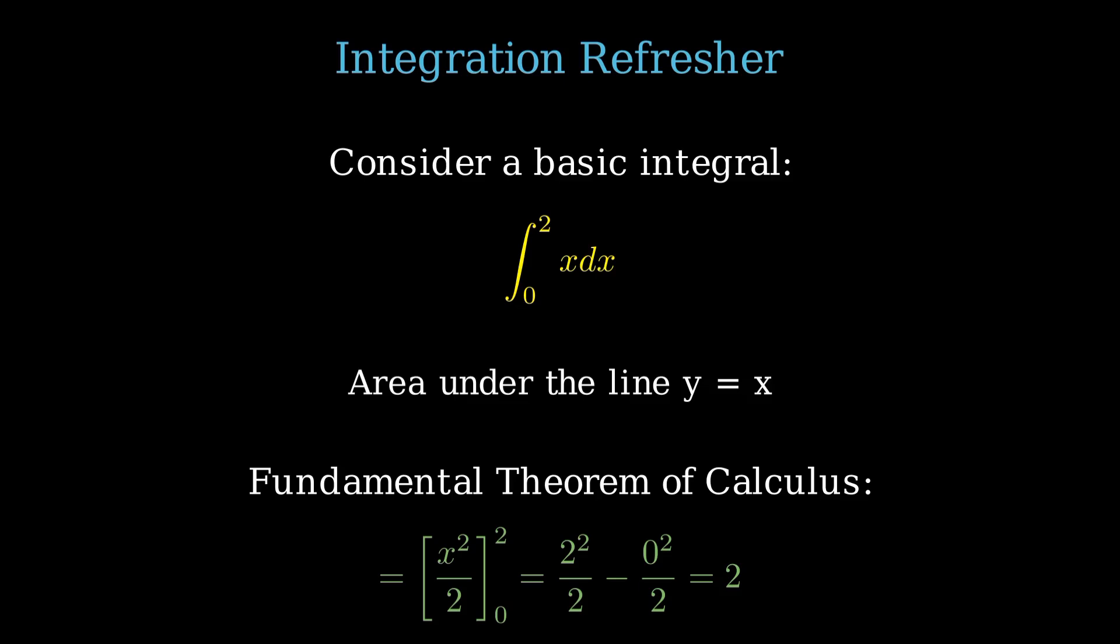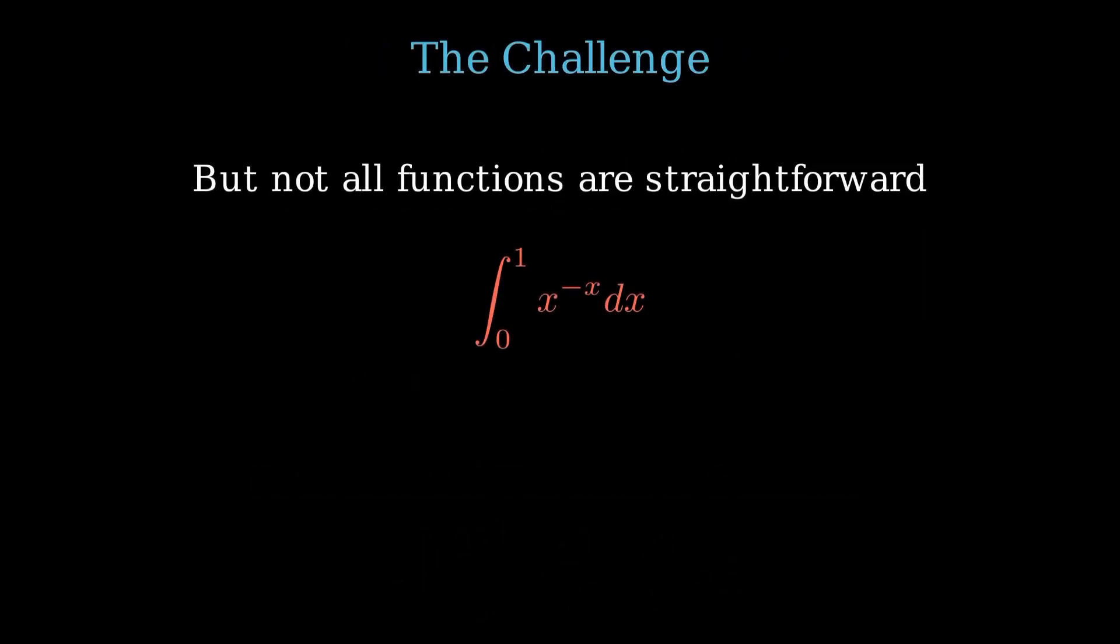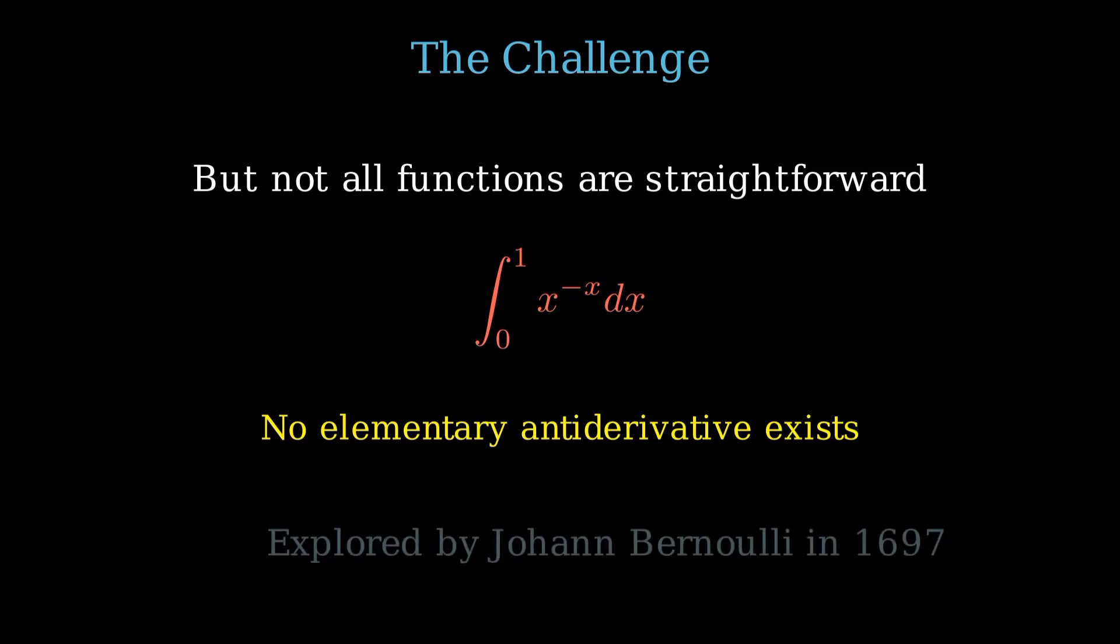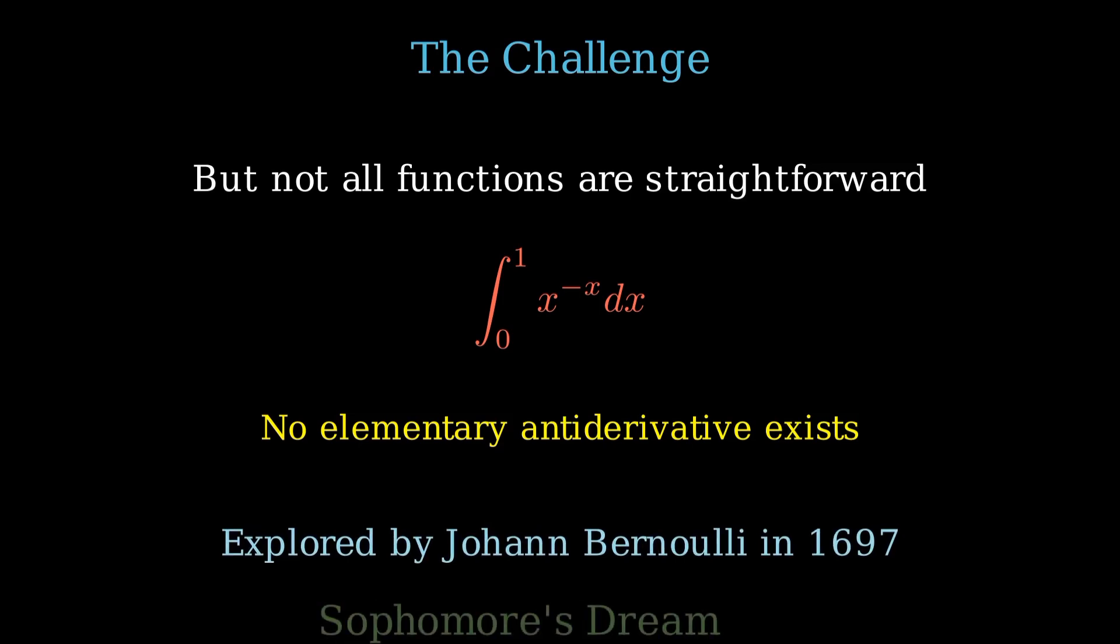However, not all functions are so straightforward. Many, like 1 over x to the x, or x to the negative x, don't have elementary antiderivatives. So, how do we evaluate its integral from 0 to 1? This very puzzle was explored by Johann Bernoulli in 1697. The result he found is one of the identities known today as the sophomore's dream.